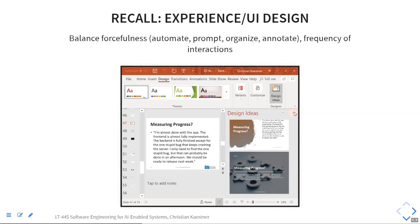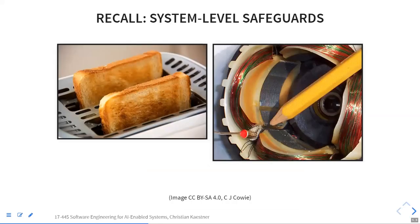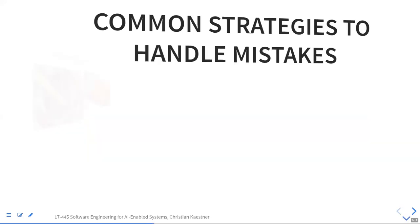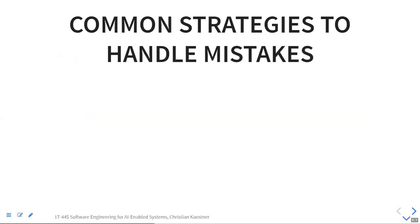We need to deal with unreliability at the system level. We talked about designing the UI, designing the experience — how forceful is it, how frequent the interactions, how to keep a human involved, whether to take automated actions. Another approach is system-level safeguards — like a thermal fuse for a smart toaster that would burn out in the worst case rather than burning down the kitchen.